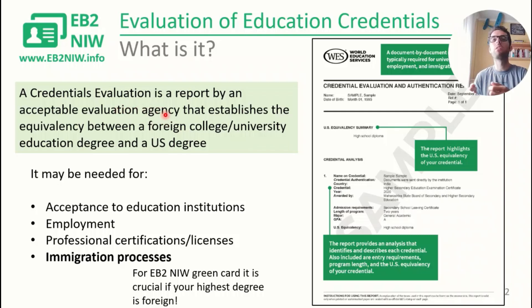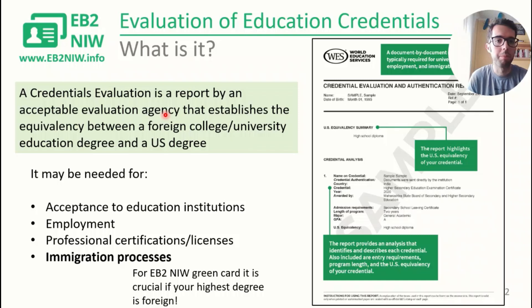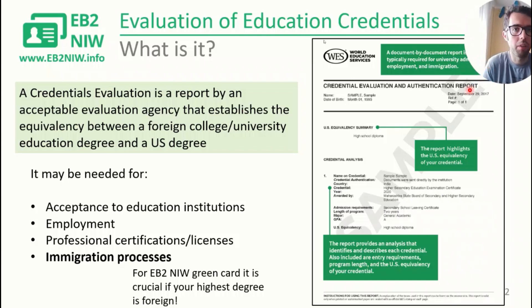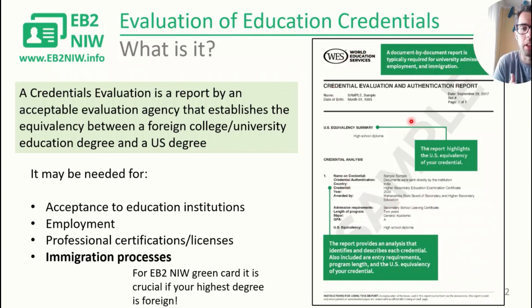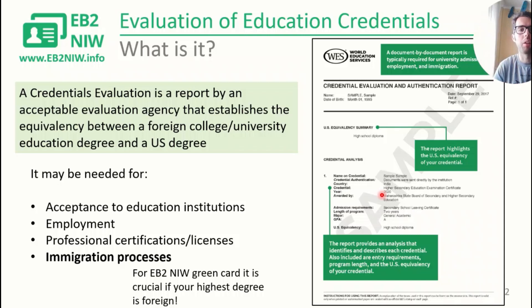If that's your highest degree, then you need to go to an acceptable evaluation agency that will take your degree, review it, evaluate it, and find a US equivalent — which, in this example, will most likely be a master's in chemical engineering in the US system. Here on the right side you can see an example report from one of these agencies. This is World Education Services (WES), an agency that does these kinds of reports. This is a sample report from their website — it includes a date, your name and information, and what type of equivalency they find.